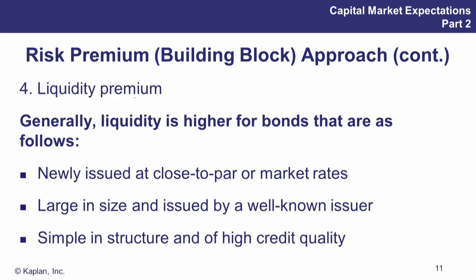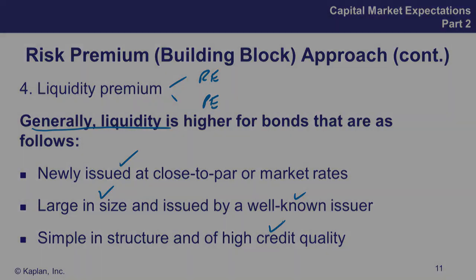Finally, the liquidity premium. We talked before about things like real estate or private equity that are quite illiquid, and there are problems with appraisal data as well. In this approach, certain bonds have greater liquidity: newly issued bonds have more liquidity, especially if they're close to par or market rates; larger issues have more liquidity; well-known issuers too; and if the credit quality is quite good, better liquidity as well.